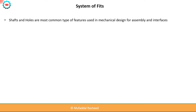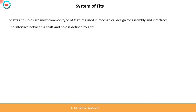In mechanical design, shafts and holes are the most common types of features which are generally used for assembly and mating. The interface between the shaft and the hole is defined by a fit, and fit is the degree of looseness or tightness between two mating parts.